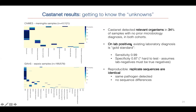On the lab-positive samples where we did have a diagnosis, we had 99% sensitivity. Specificity is harder to calculate — when Castanet finds something in a lab-negative and it's quite a strong positive, you'd have to assume these are false positives, but they may not be. With that caveat, it's still very high specificity, and it may in fact be much higher if Castanet rather than the lab is correct. We also did quite a bit of replication and found results were completely reproducible — replicate sequences were identical, with no sequence differences, so the sequences were completely identical.